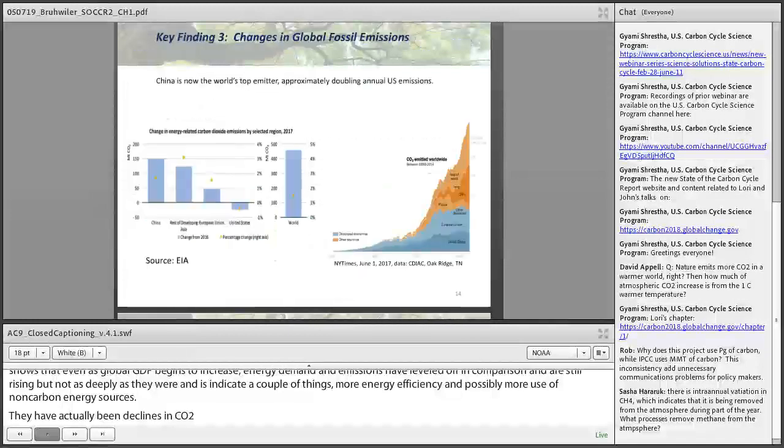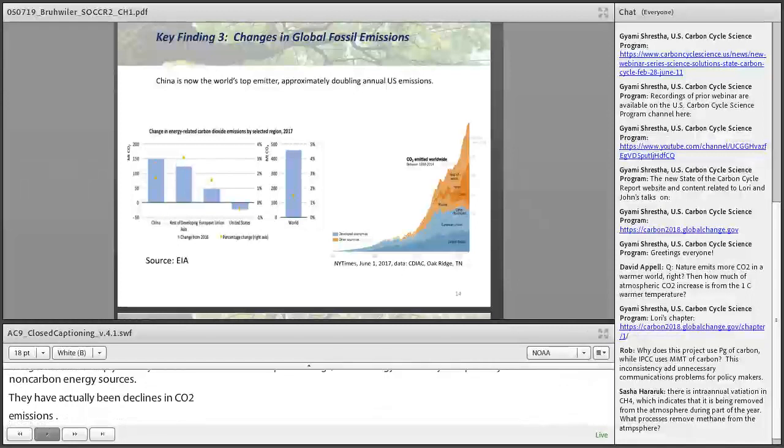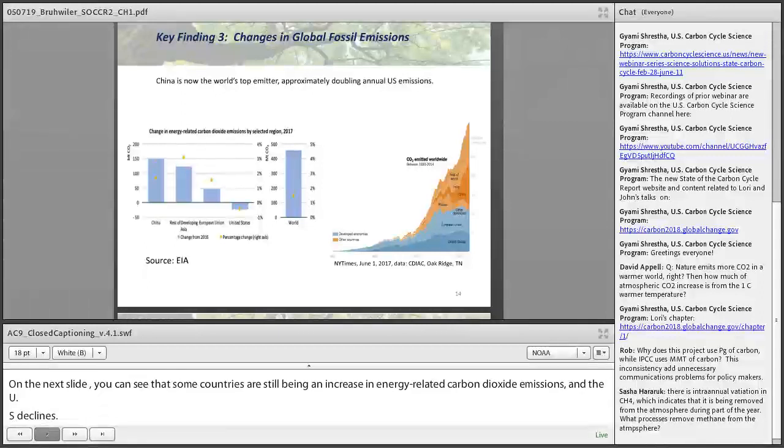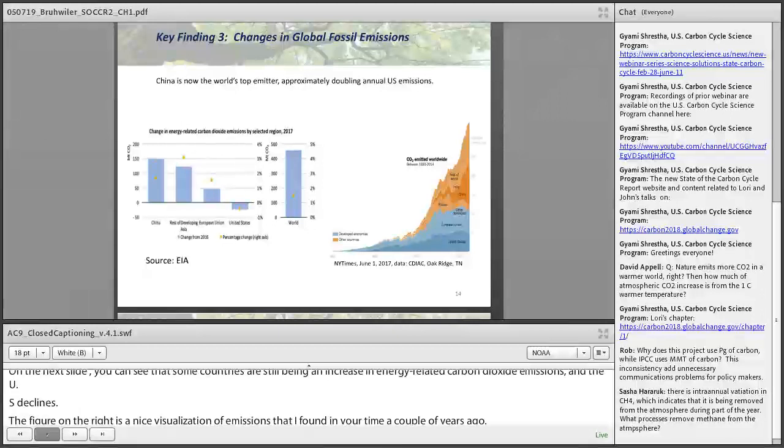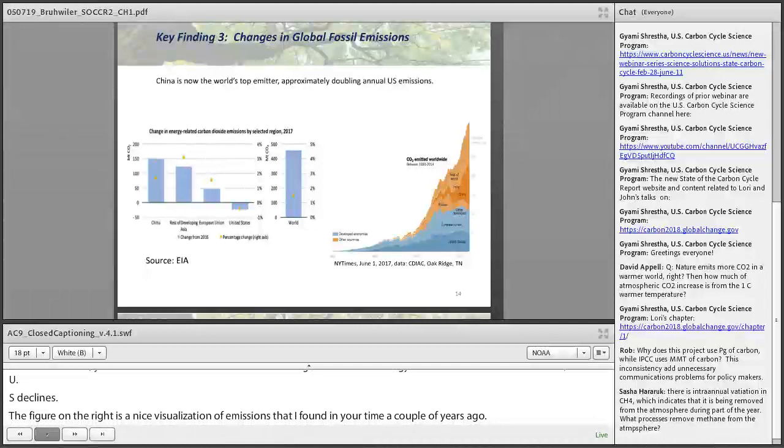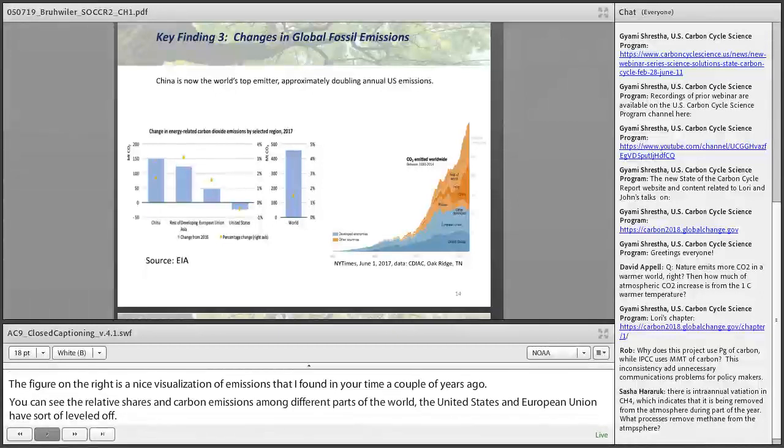Global energy demand has been increasing fairly steeply. According to the IEA, a lot of this increase is driven by demand from China and India and other developing countries. About 72% of this rise is still being met by fossil fuel use. However, this interesting figure on the right shows that even as global GDP continues to increase, energy demand and emissions have leveled off in comparison. They're still rising but not as steeply. This indicates more energy efficiency and possibly more use of non-carbon energy sources. There have been declines in CO2 emissions from some countries like the U.S., due to more use of renewables and probably a switch to natural gas, which is less carbon intensive than coal.